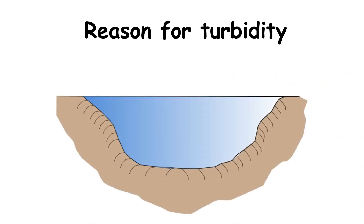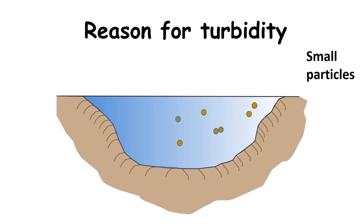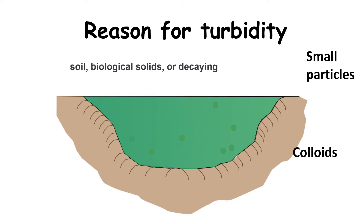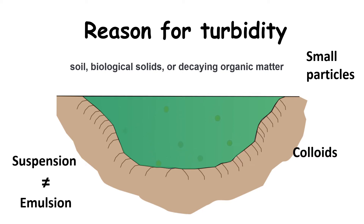Turbidity in wastewater is caused when small particles mix with the water stream and stay in suspension due to the motion of the water — these are called colloids. Suspended particles in river water include, for example, soil, biological solids, or decaying organic matter. Suspensions are different from emulsions, where two liquids that usually don't mix are combined, like fat and water.